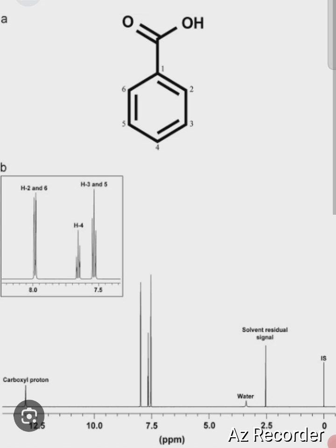This first peak which is situated at 0 ppm is nothing but the TMS signal. Then this peak is the residual DMSO peak, and this small peak is moisture present in the DMSO solvent.